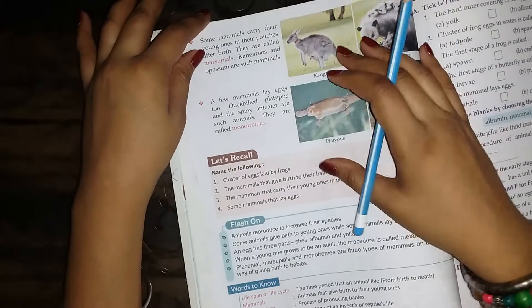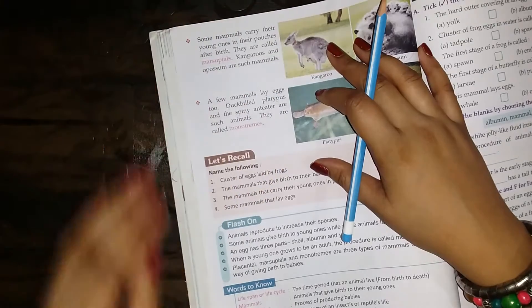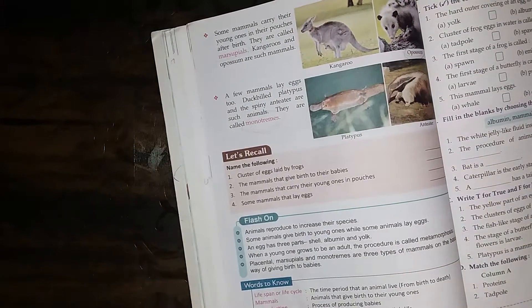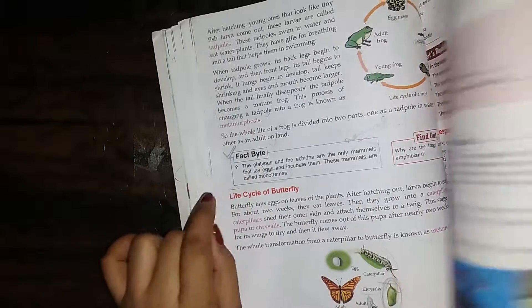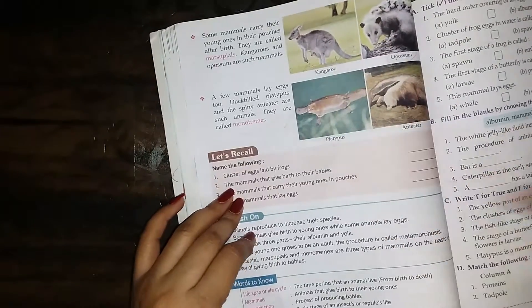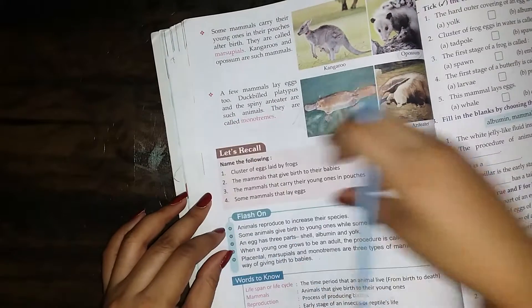So we have talked about three categories in which we have learned from our babies. And this is very important, which we have studied facts. This is about monotremes. This is how we have finished the chapter. Let's Recall.